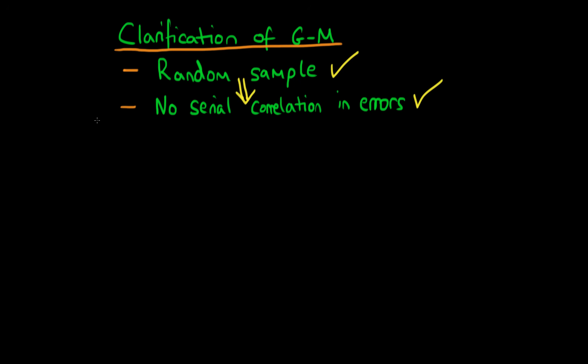That's the clarification. I'm now going to provide a mathematical proof as to why having a random sample necessarily implies that we have no serial correlation in errors. To do so we're first going to talk about our population. Within the population there is some population process, so there is some yi equals alpha plus beta xi plus some error term ui.